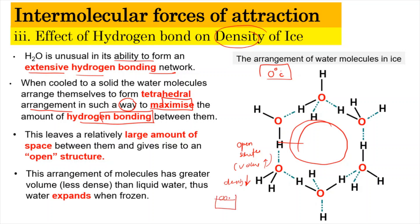When the volume increases, the density decreases, and so ice floats in water. Using the density formula — density equals mass divided by volume — because the tetrahedral arrangement creates open space (larger volume), the density becomes lower. This is the reason why ice floats in water, as seen when ice cubes float in a glass of iced tea.